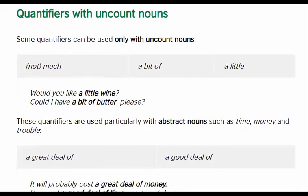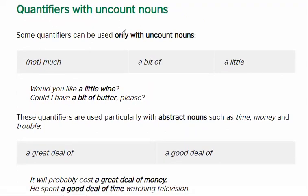Some quantifiers can be used only with uncountable nouns: not much, a bit of, a little. 'Would you like a little wine?' 'Could I have a bit of butter, please?' Remember, you can't count wine — it's a liquid — and you cannot count butter; you can measure it, but you cannot count it. These quantifiers are used particularly with abstract nouns such as time, money, and trouble: a great deal of, a good deal of. 'It will probably cost a great deal of money.' 'He spent a good deal of time watching television.'